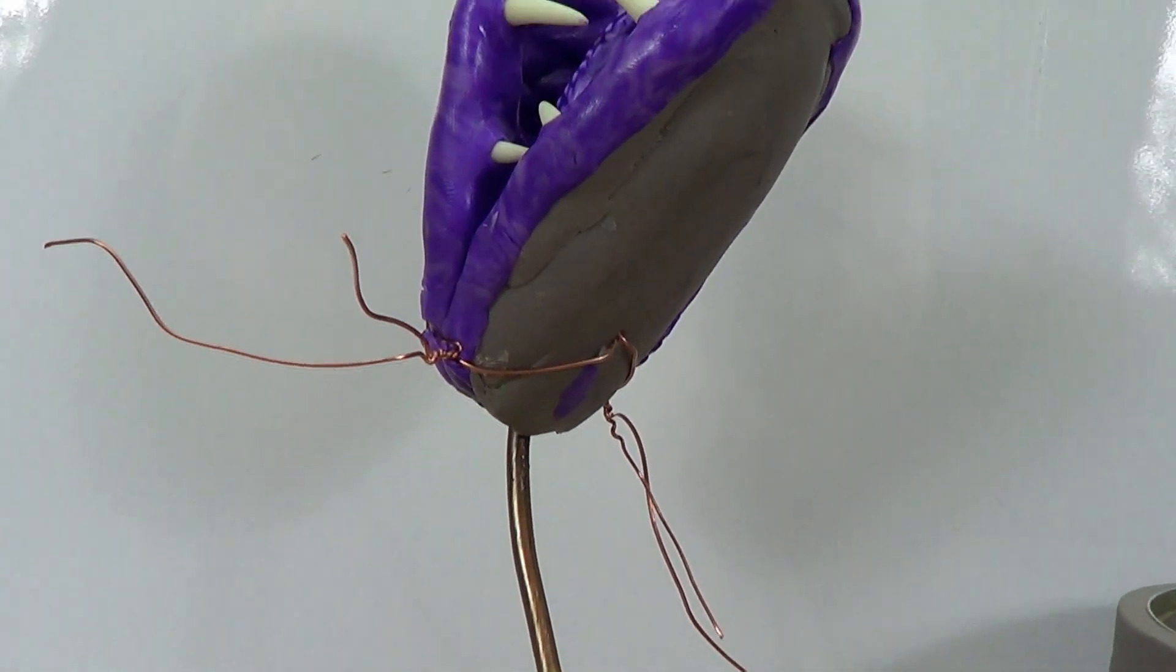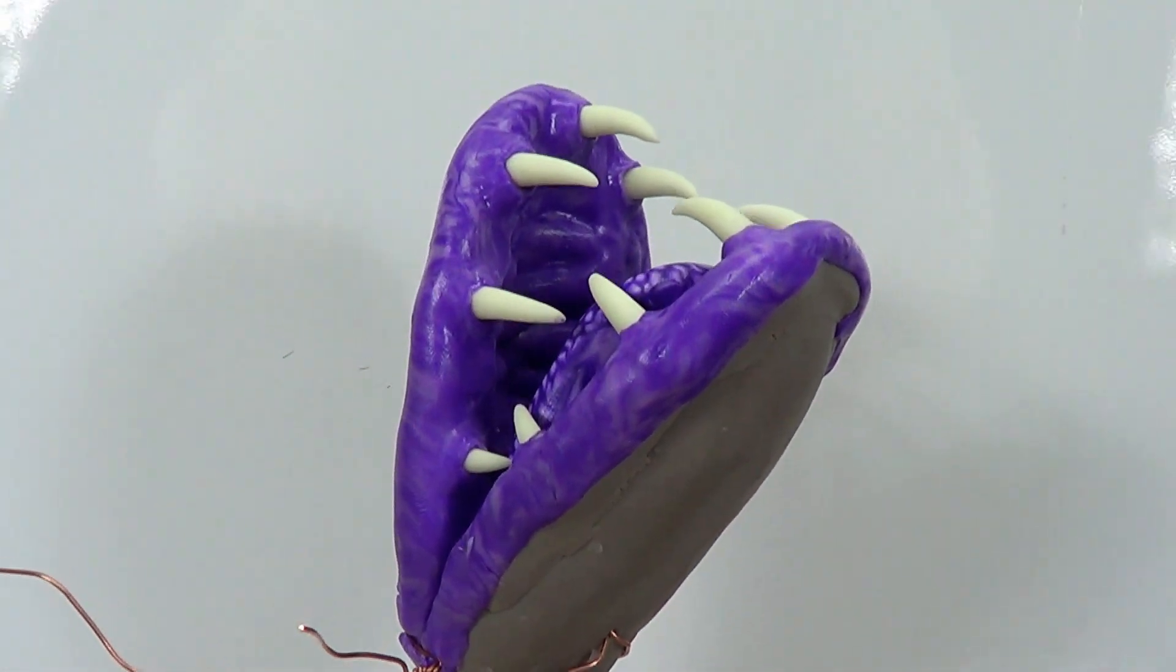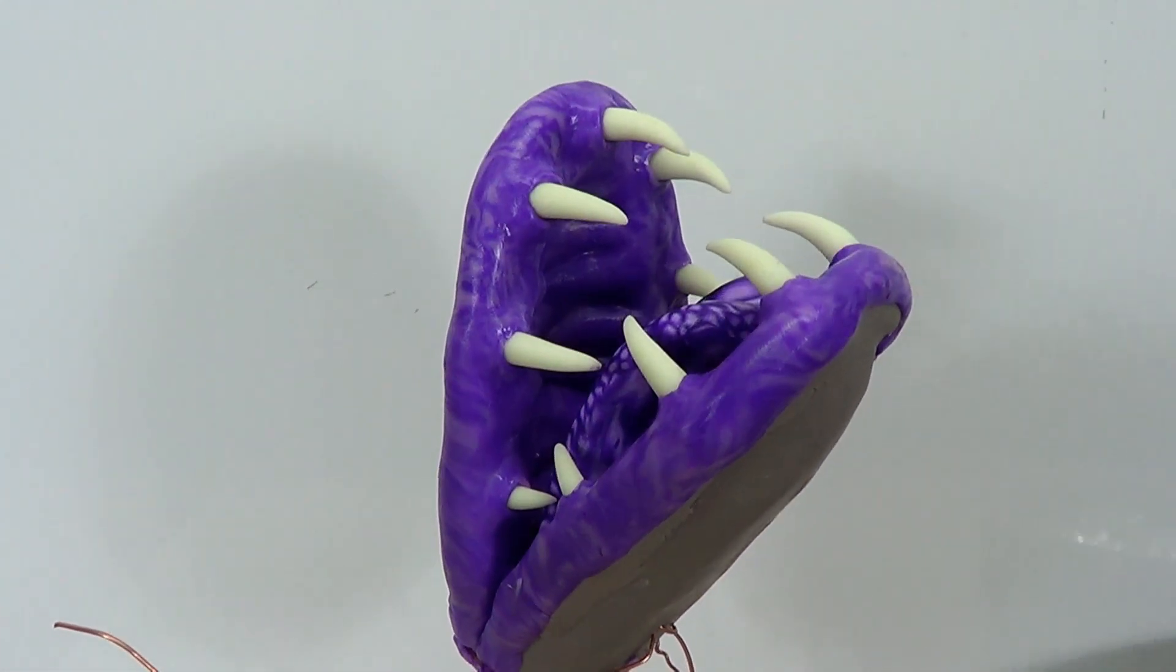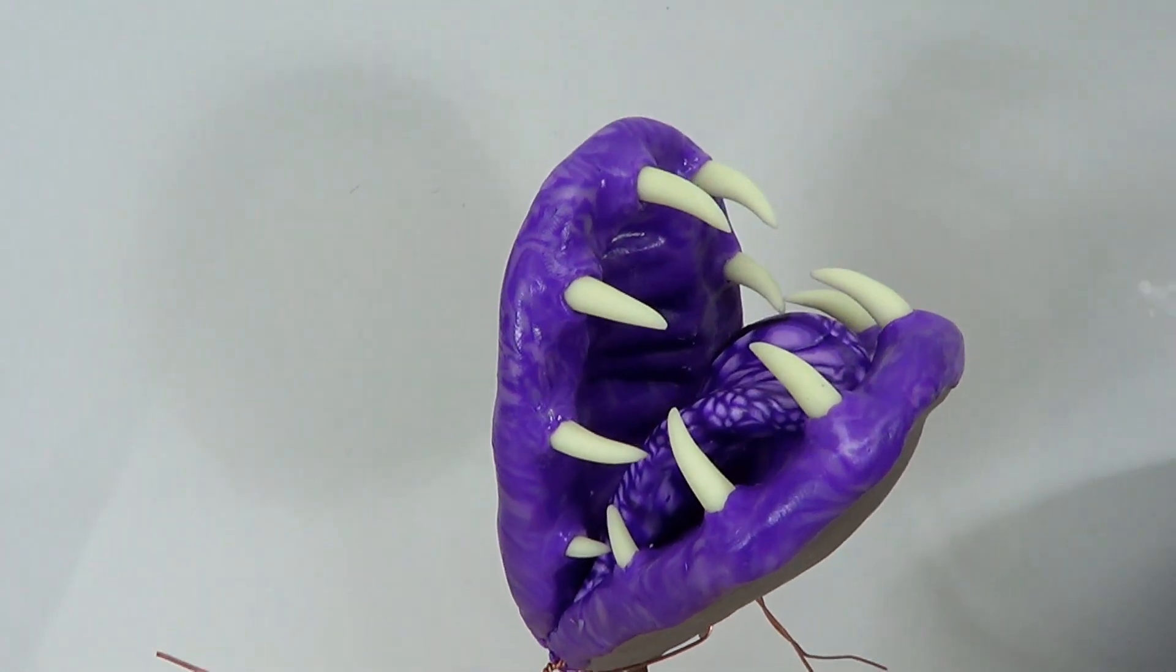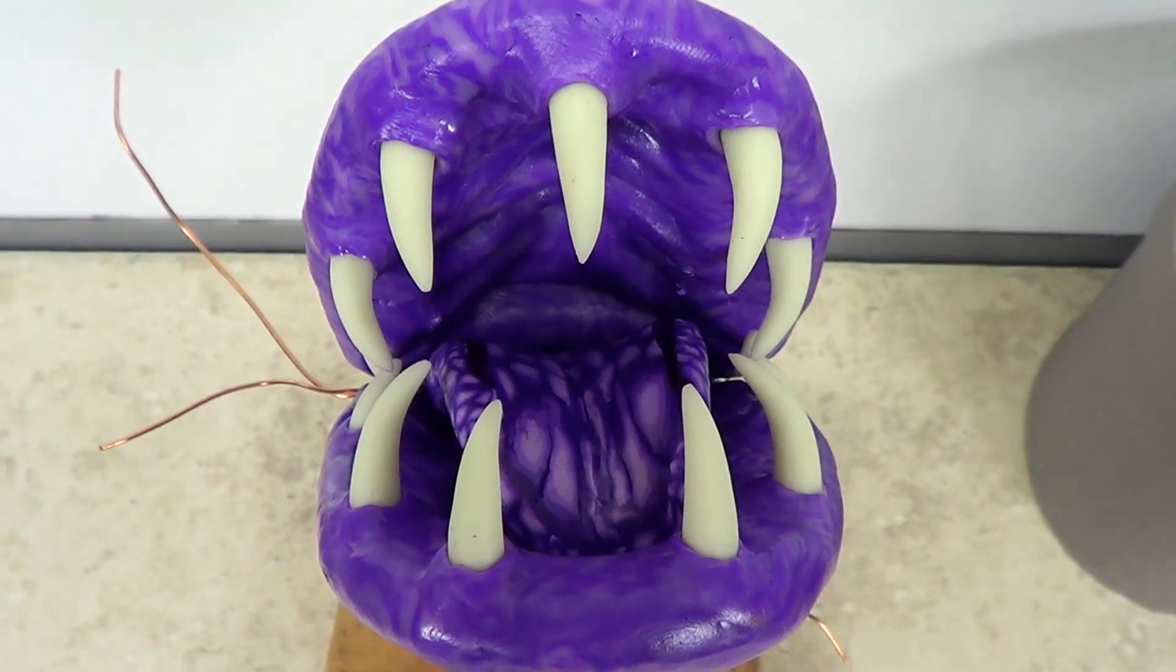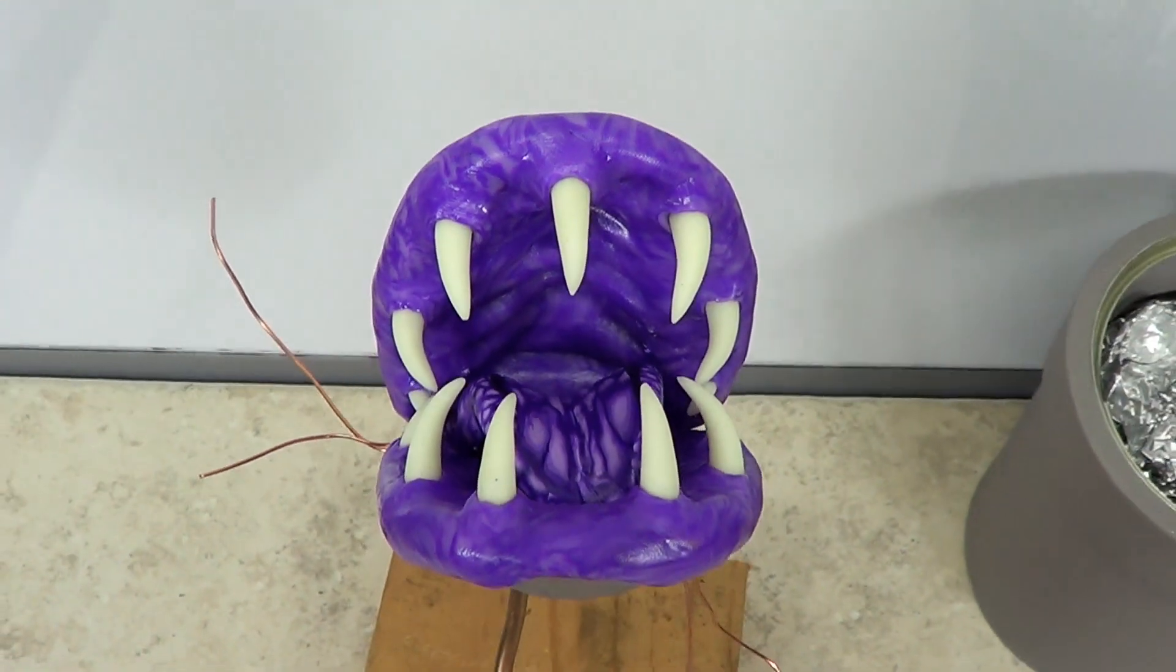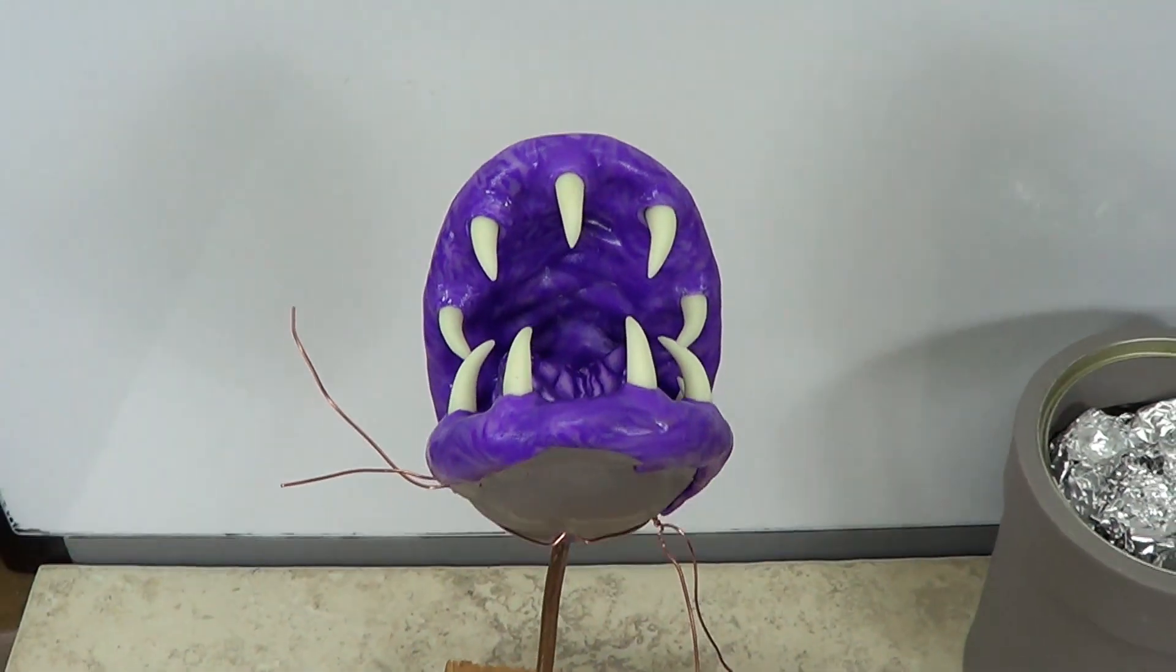Hello everybody, I'd like to welcome you to part 5 of this polymer clay sculpting project. I'm making a piranha plant, or a man-eating plant. In this video, I'm going to be doing the assembly of the parts that I've already made in the previous videos.